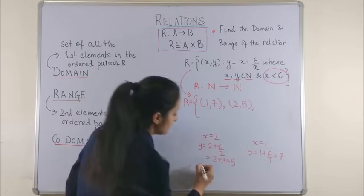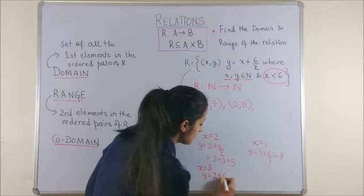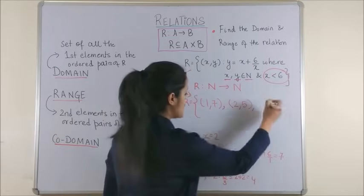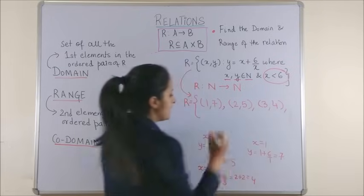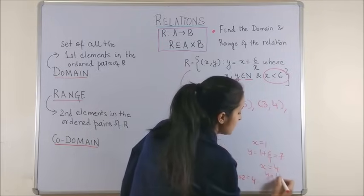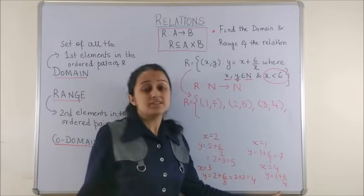Similarly, let's move to 3. So, when your X is equal to 3, your Y becomes 2 plus 6 by 3 which is 2 plus 2. That's 4. So, the next pair becomes 3, 4. Now, if I take X to be 4, your Y is 1 plus 6 by 4. This time, which is 1 plus 3 by 2. And, that will not give us a natural number.